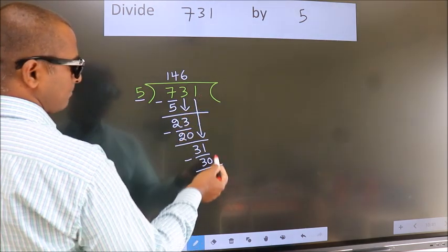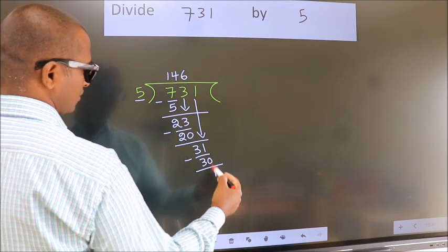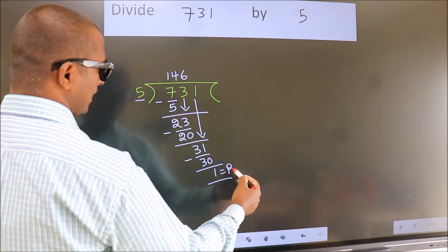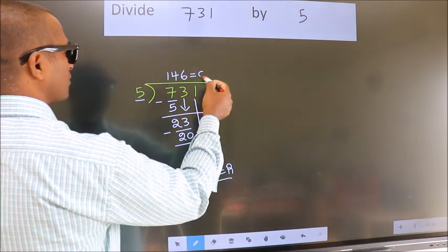No more numbers to bring down. So, we stop here. This is our remainder. This is our quotient.